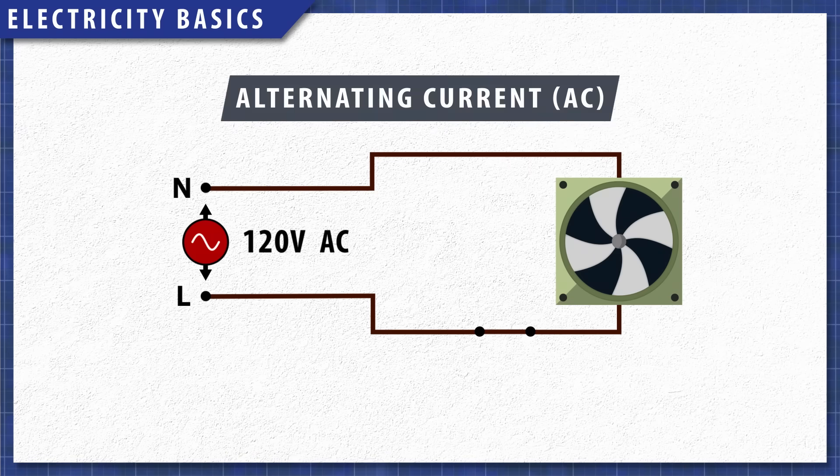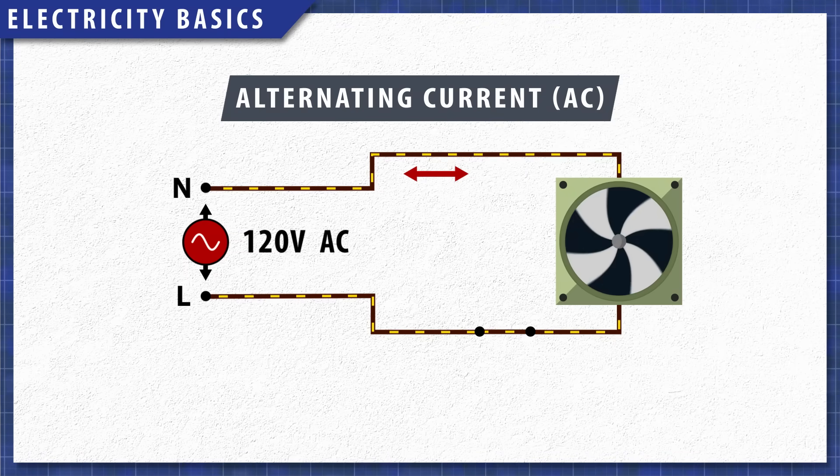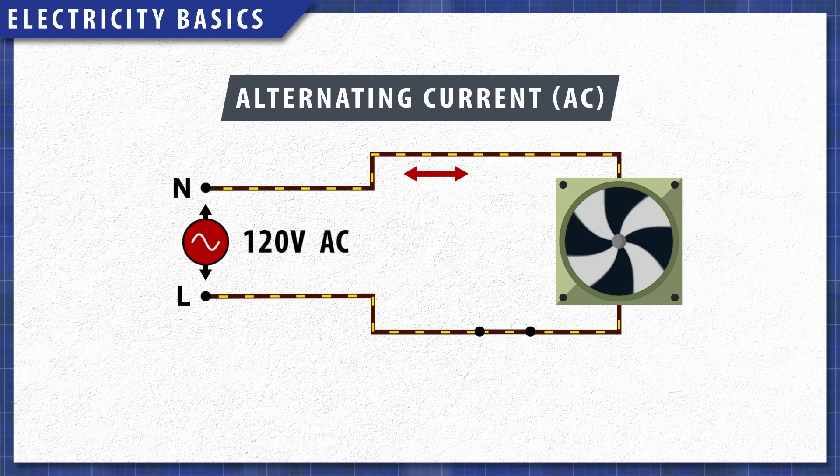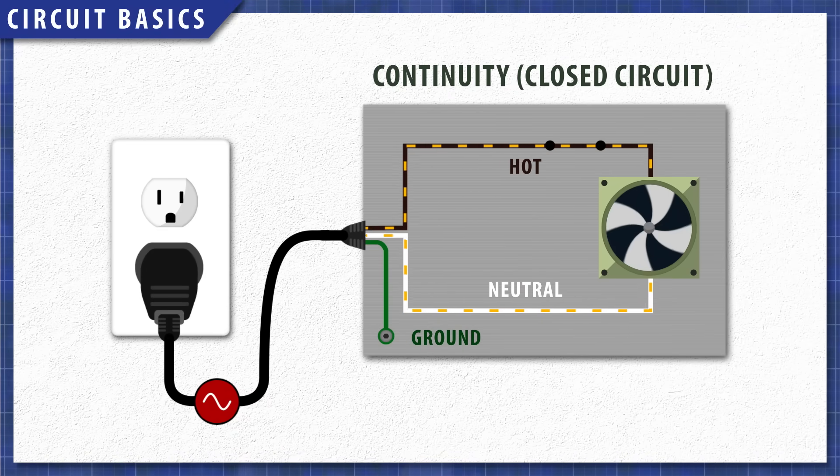Your home is run off 120 volts alternating current or AC power. The direction that the current flows is changing 60 times a second or at 60 hertz. This is represented by the sine wave. In either case the electrons always need a continuous path to return to the source. This is continuity or a closed circuit.